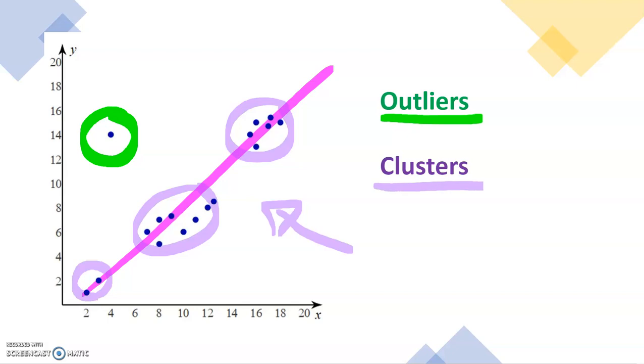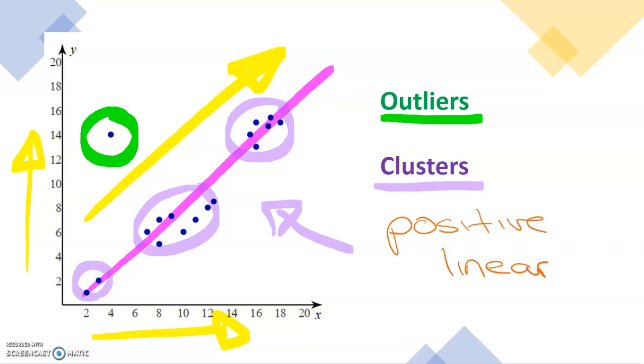If we wanted to describe this further, we can see that the line goes up from left to right, or y is increasing as x is increasing. Therefore it is a positive relationship and it is also linear. So this set of data can be represented by a positive linear relationship.